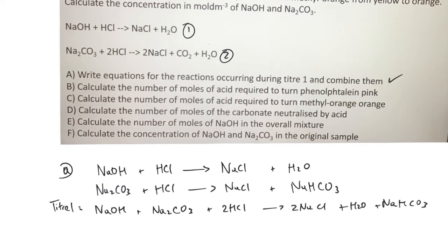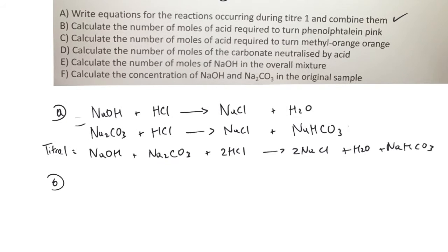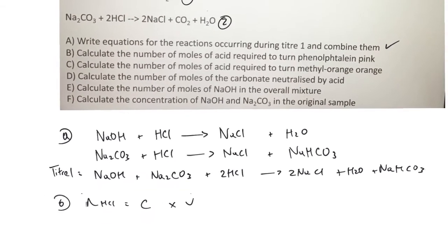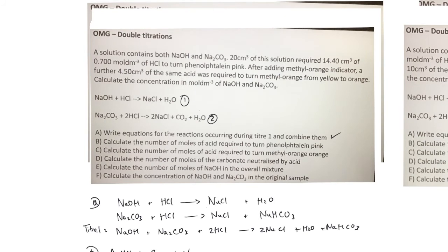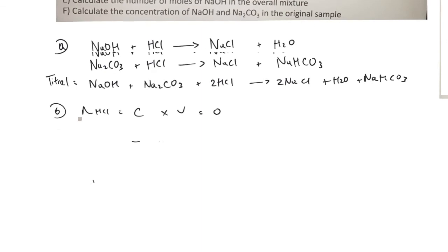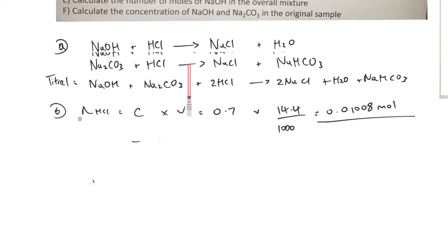Next, we calculate the number of moles of acid required to turn phenolphthalein pink — a titration calculation. The number of moles is calculated by concentration times volume. From the data for Titration 1, we have 14.4 cm³ of 0.7 mol/dm³ acid, so: moles = 0.7 × 14.4 ÷ 1000 = 0.01008 moles. That's the number of moles of acid required to neutralize the bases in Titer 1.